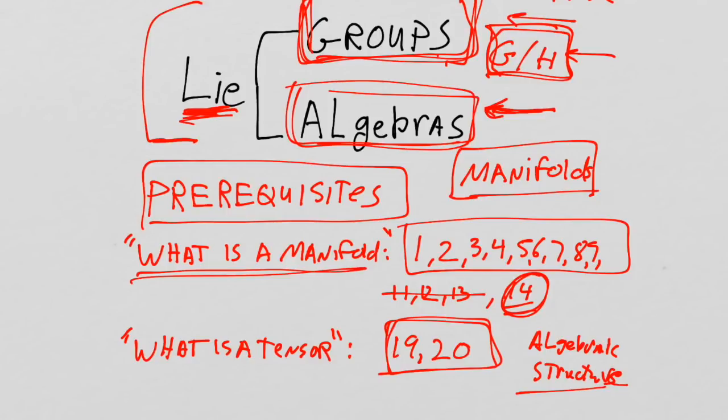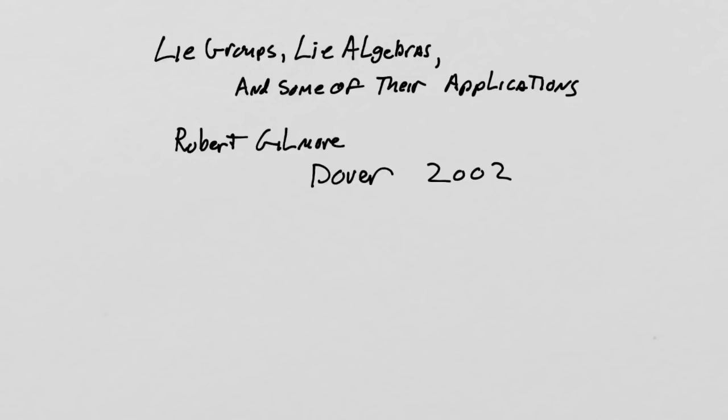So the citation for Gilmore, in case you want to follow along in the actual text, is this. This is the citation. Lie groups, Lie algebras and some of their applications. Robert Gilmore, published by Dover. My edition is 2005. And it's just a great book.